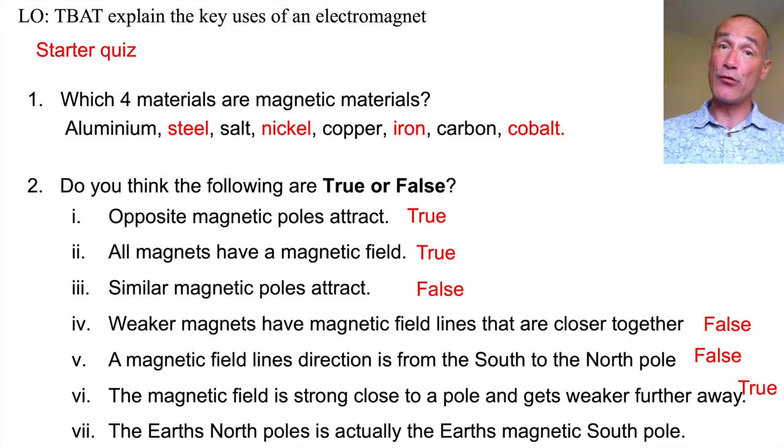And finally, the earth's north pole is actually the earth's magnetic south pole is also true. Because the north pole of your compass will point to the south. So it does point to geographical north, which is actually the south pole.